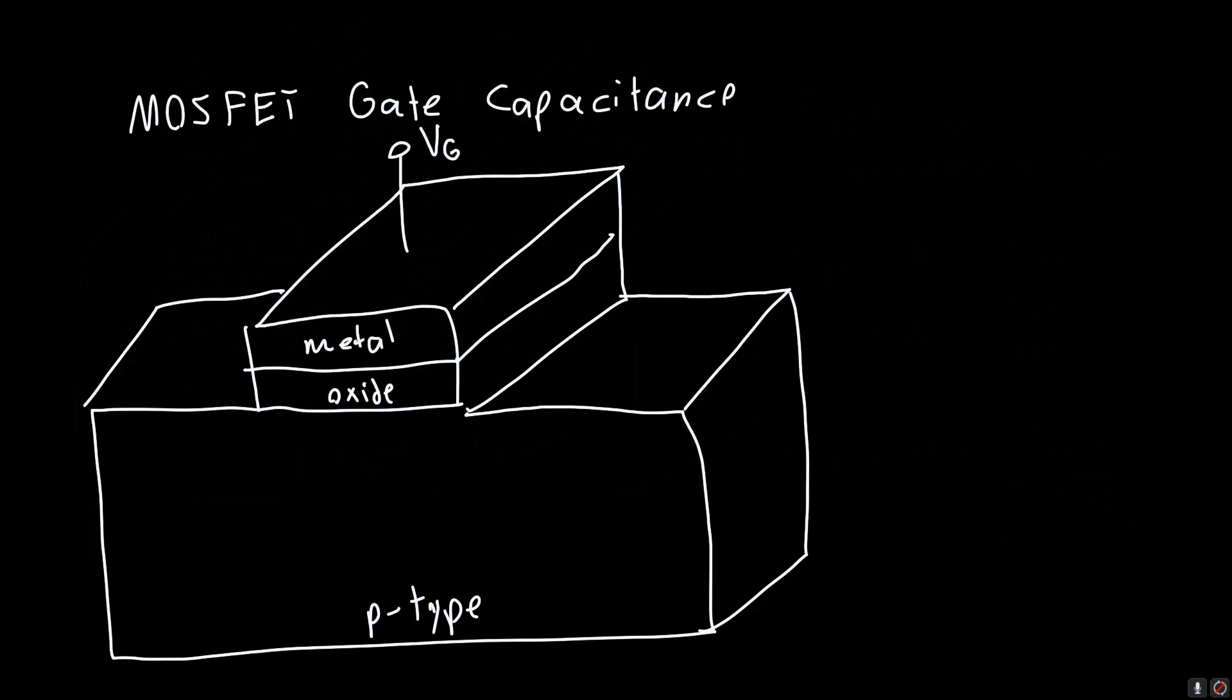And so we know if Vg is equal to zero, we've more than likely got this depletion region here. And I say more than likely because it's going to depend, remember, on the value of VMS. So it's going to depend on the amount of band bending. And so unless we know the metal, we can't say for certain whether there's going to be depletion region there. But let's say that there is. And so we've got this depletion region that's formed around the gate.